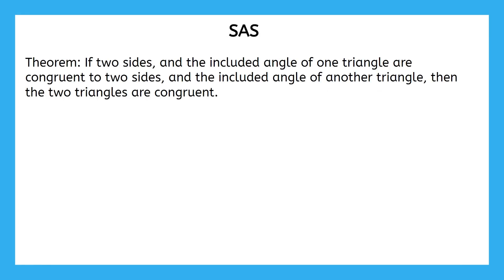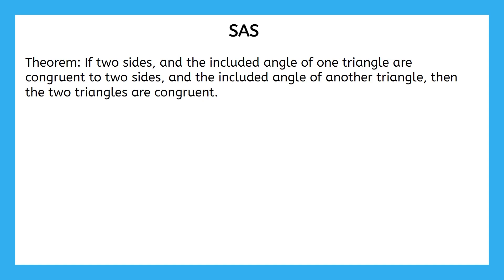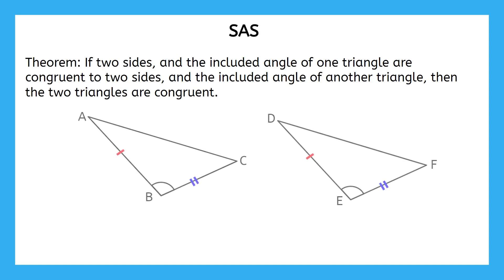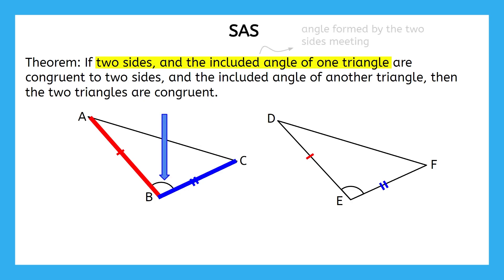The first triangle congruence theorem we're going to look at is the side-angle-side congruence theorem. It states that if two sides and the included angle of one triangle are congruent to two sides and the included angle of another triangle, then the two triangles are congruent. Let's use a visual to help us break this down. Here are two sides, and the included angle is the angle where those two sides meet.